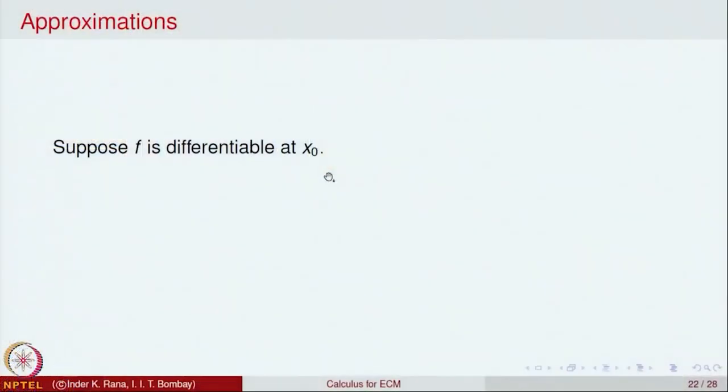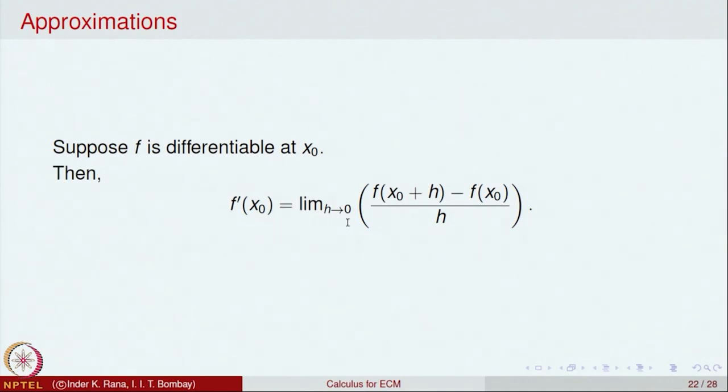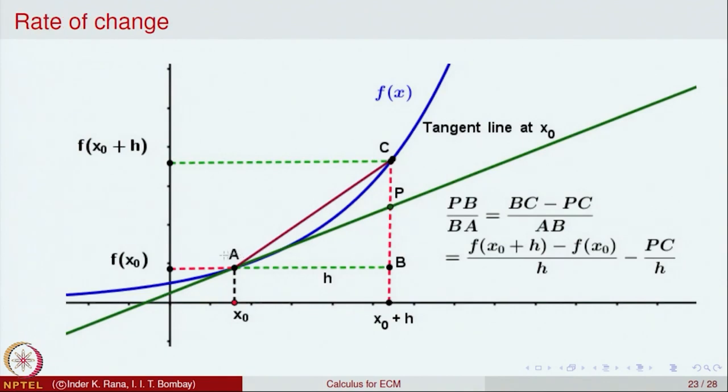We have now obtained many examples of differentiable functions. Here is an important application of differentiability — the theory of approximations. For any differentiable function it gives a way of approximating the value of the function at points near the point where it is differentiable. To understand this, consider a function f which is differentiable at x₀. The derivative f'(x₀) is the limit as h→0 of [f(x₀+h) − f(x₀)]/h, and this limit equals f'(x₀).